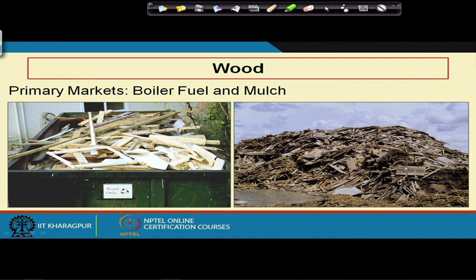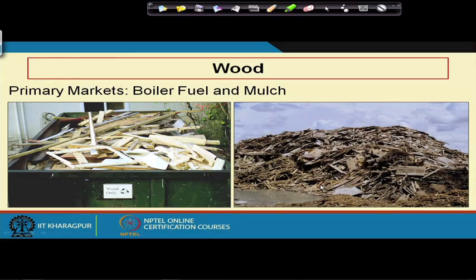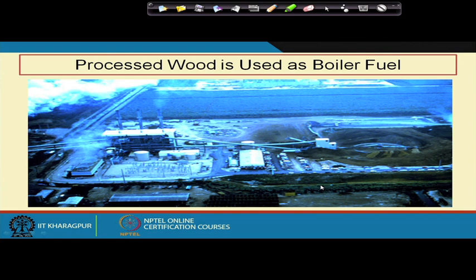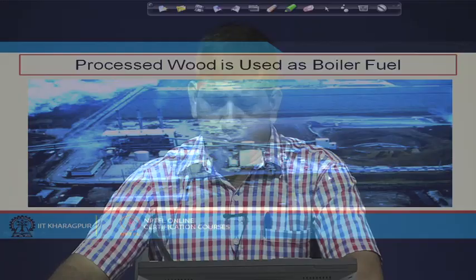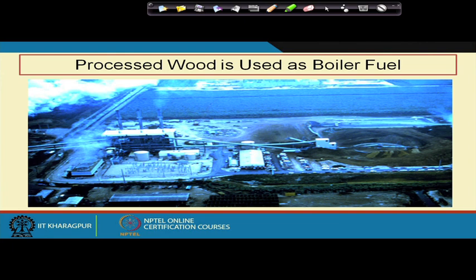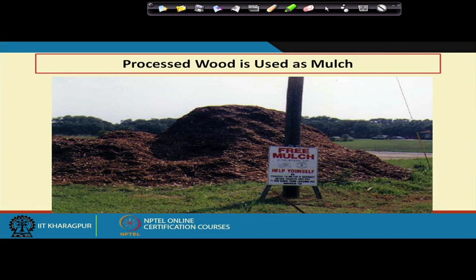Heavy metals are a real issue from lead-based paint, and also from pressure-treated wood — especially in hot humid climates like Florida — where people use pressure-treated wood to prevent decay and termites. Since it contains chromium, arsenic, and copper, these do leach out when in contact with moisture or soil. If processed wood used as boiler fuel has heavy metal contamination, the resulting ash may have elevated concentrations of heavy metals and could potentially be a hazardous waste.